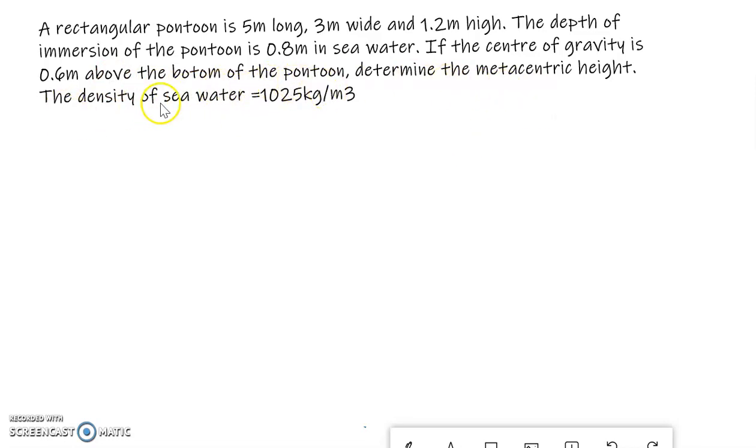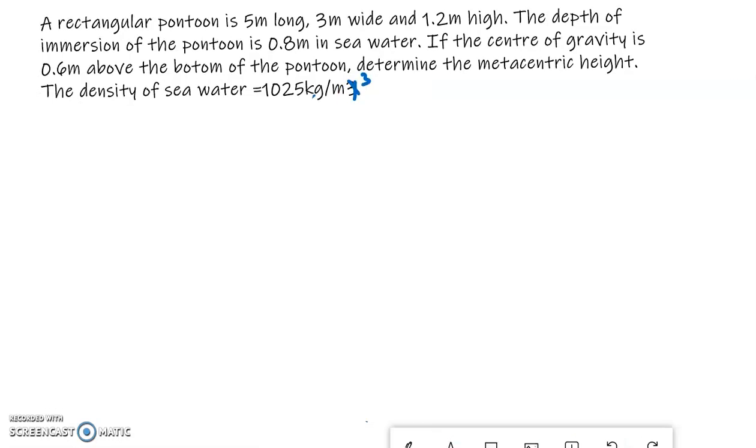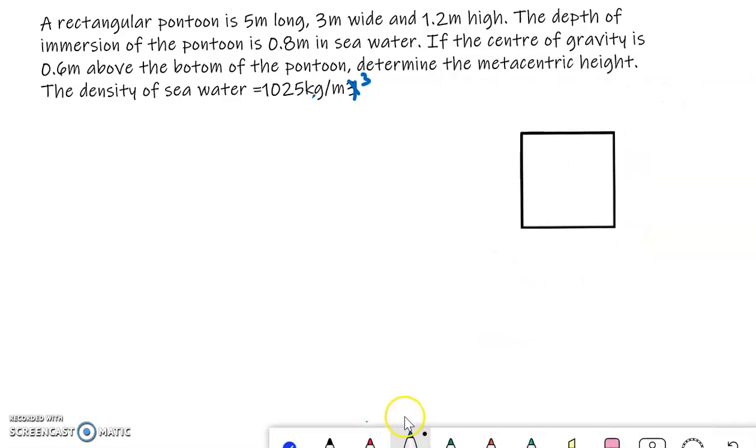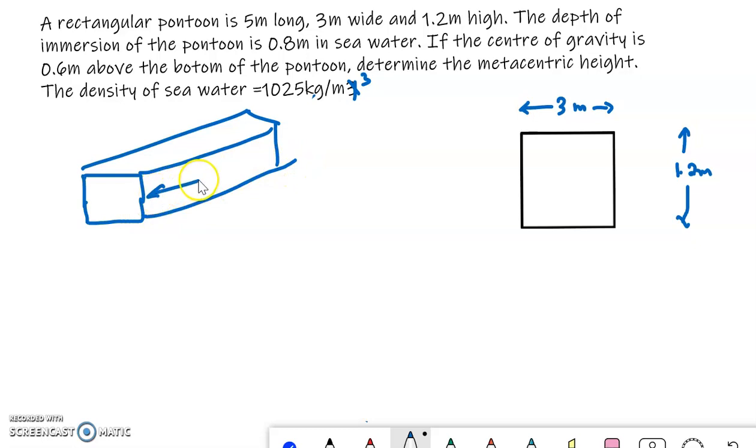The density of sea water is 1025 kilogram per meter cube. So here you have a rectangular pontoon which is 3 meter in width, 1.2 meter in height, and it is having a length of 5 meter.